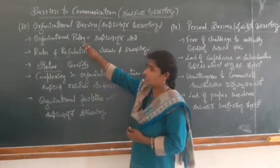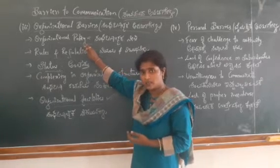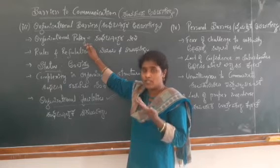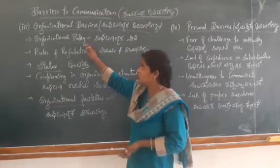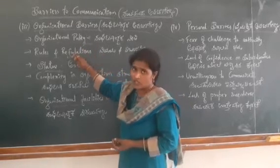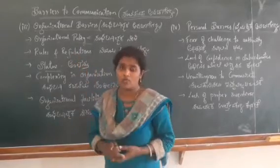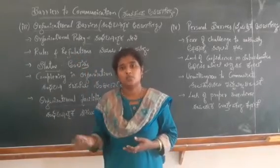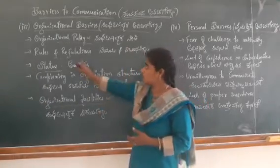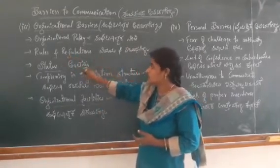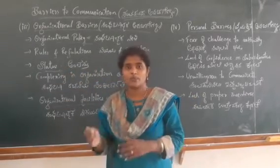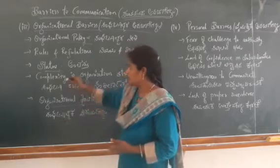These are the five important organizational barriers. First, organizational policy — if you are not providing information to the employees, then they cannot communicate with the supervisors or share their ideas. Then rules and regulations — if there are too many rules and regulations to be applied, subordinates cannot communicate with supervisors because they have to follow all the rules. Then status — if supervisors concentrate only on their status, they cannot cooperate with employees, and barriers arise.